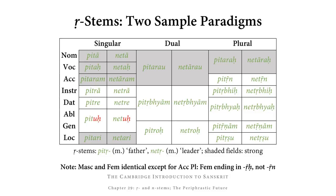In the dual we have pittarau, and in the plural we have pittaraḥ — so in both cases the strong stem pittar plus endings au and aḥ that we already know. For netṛ, the singular gives netā, netaḥ, netāram — nominative and vocative should simply be memorized, while netāram is predictable: strong stem in vṛddhi (netār) plus ending -am. Dual netarau, plural netaraḥ. The locative singular is also shaded because unexpectedly the stem stands in guṇa for both types — pitari and netari.